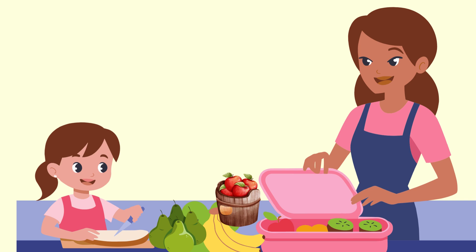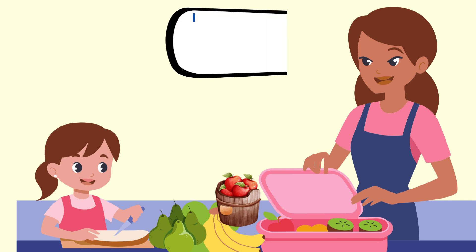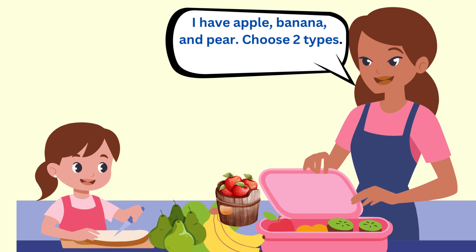Meet Zuri. Every morning before school, her mom gives her a choice of taking only two types of fruits to school. Today, there's apple, banana, and pear on the table. Zuri can choose any two fruits to take in her lunchbox today. Zuri is curious — how many different pairs of fruits could she possibly take to school?